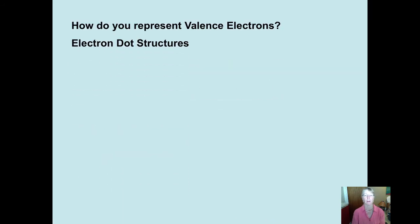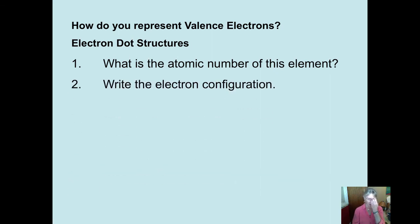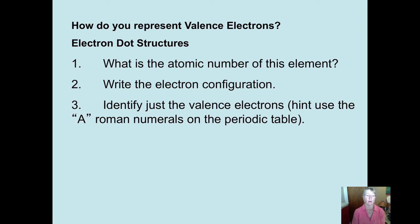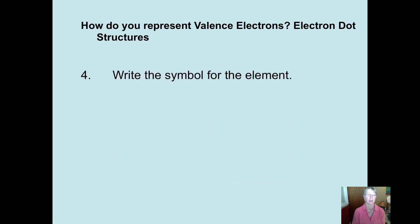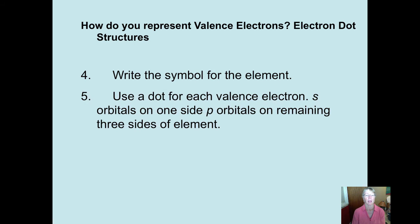So there's a way you can represent valence electrons. And I have to apologize on the PowerPoint here because some of the formatting is coming out a little funky. They're called electron dot structures. And to be able to do this, it's very simple. You just find the element by locating it on the periodic table. You can write its electron configuration, which would be the same number of electrons as the atomic number, as long as it's a neutral atom. And what we want to focus on, though, are just the valence electrons.